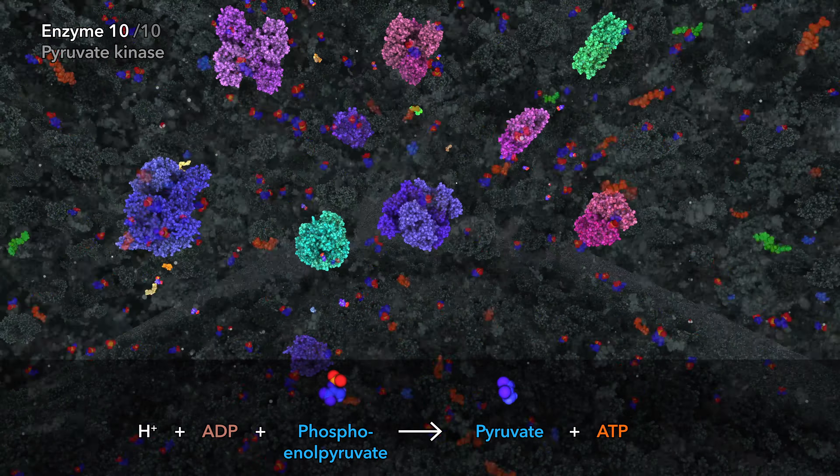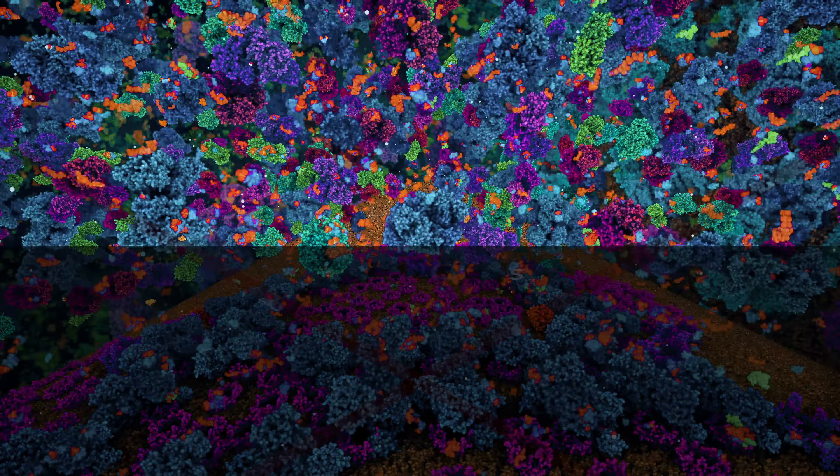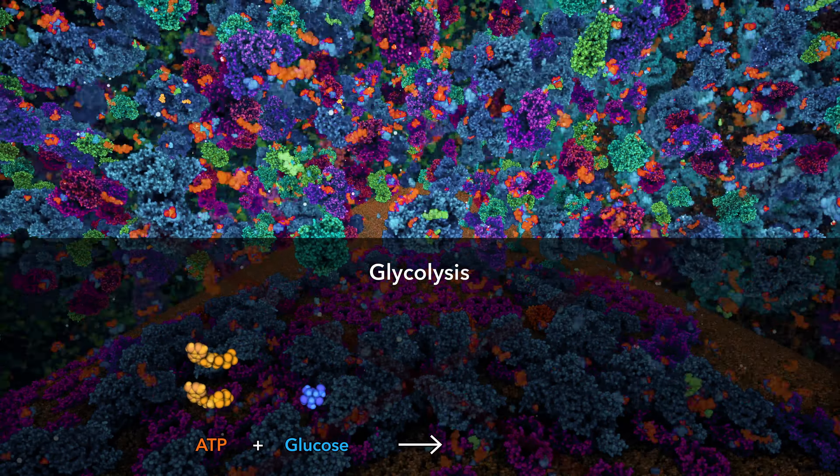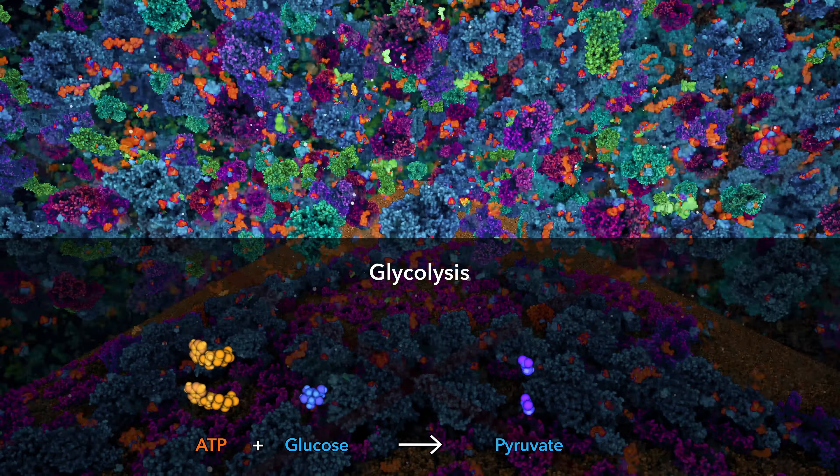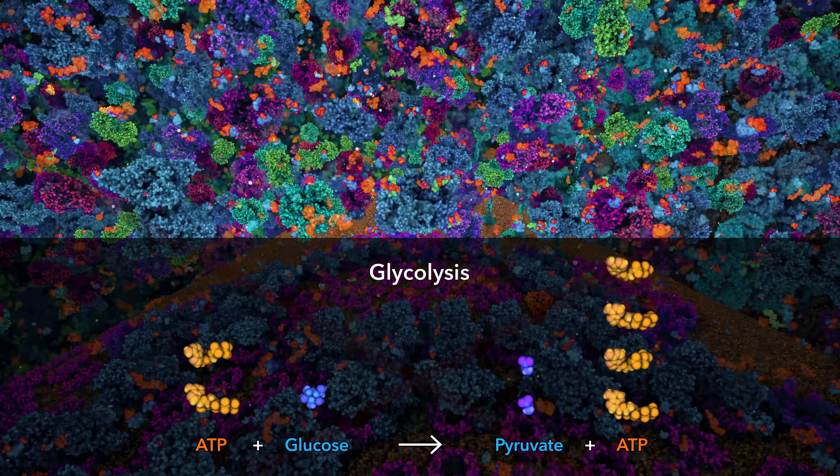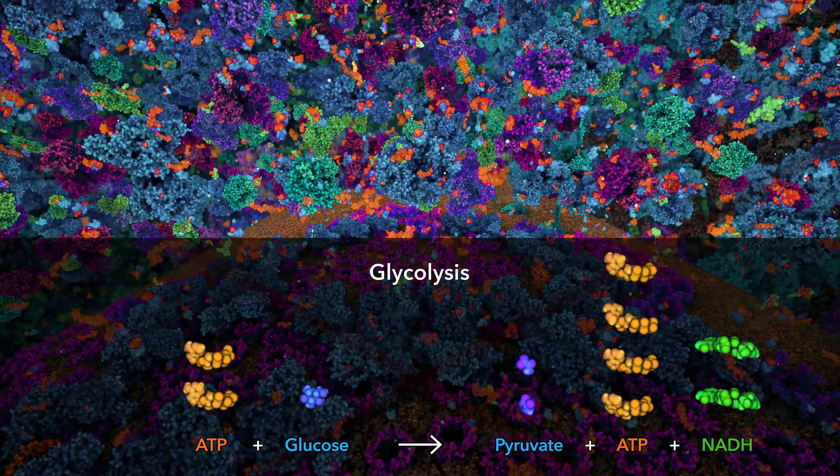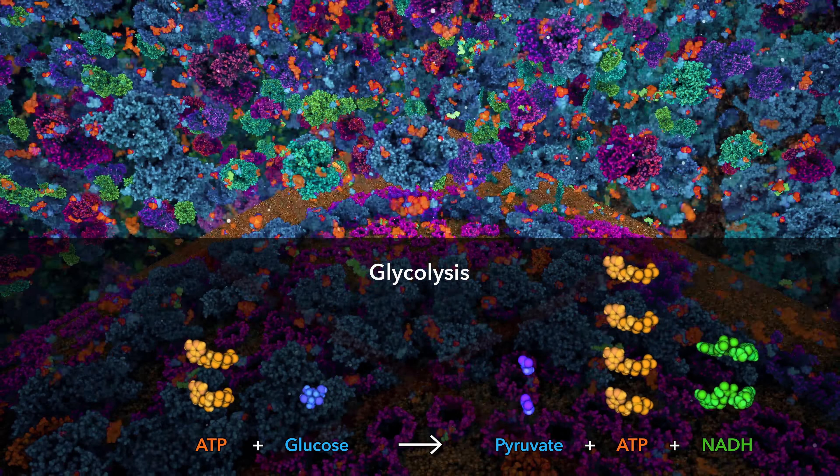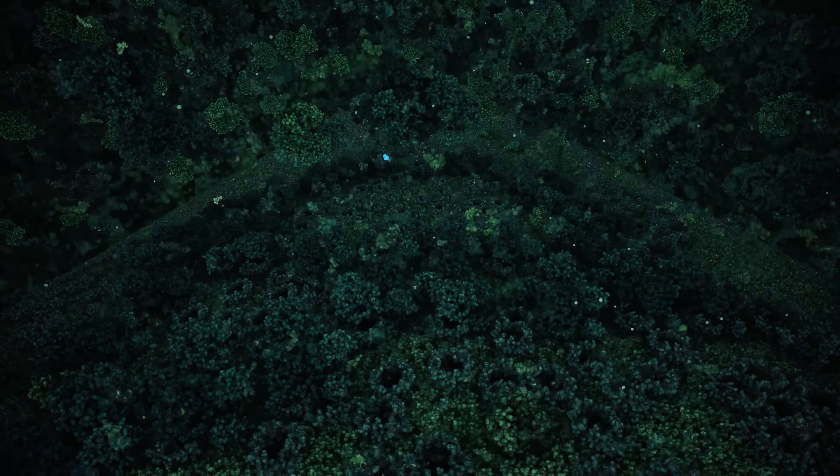Glycolysis finally produces a net gain in ATP. The glycolysis pathway breaks down glucose into two molecules of pyruvate, gaining 2 ATP and 2 NADH in the process. Glycolysis releases only a small fraction of glucose potential energy.